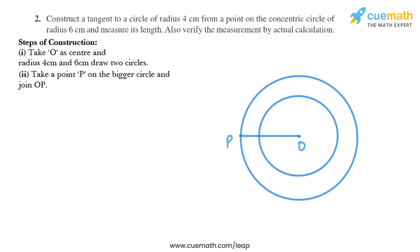Now in the next step, with O and P as center and radius more than half of OP, draw arcs above and below OP to intersect at X and Y.